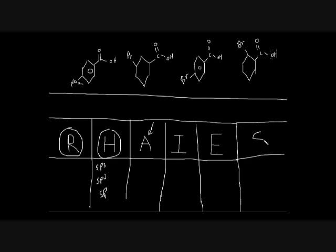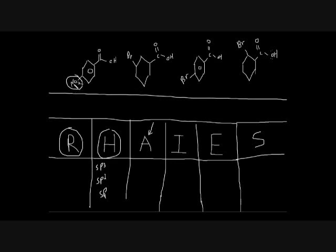In the first example, we want to know which hydrogen is most acidic. All four molecules are carboxylic acids, so we can't distinguish them on that basis alone — they all have the same group. The differences are the substituents attached to the ring and how far they are. Let's call them A, B, C, D. Molecules A and C have an aromatic ring; B and D do not.